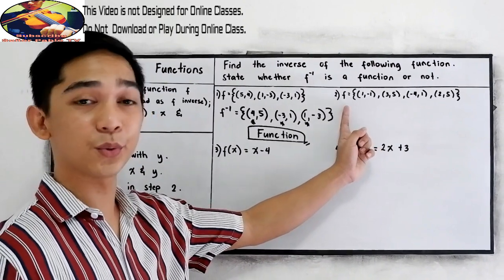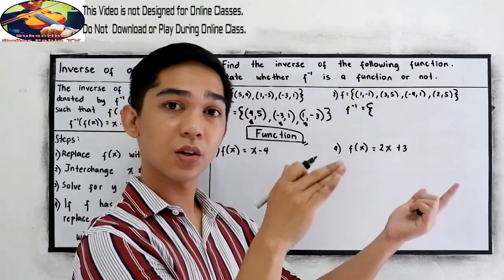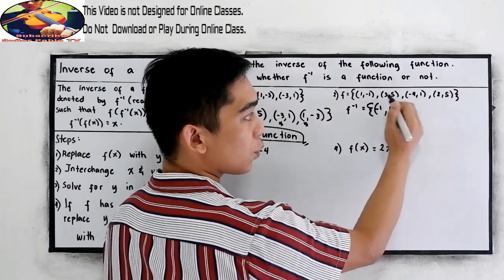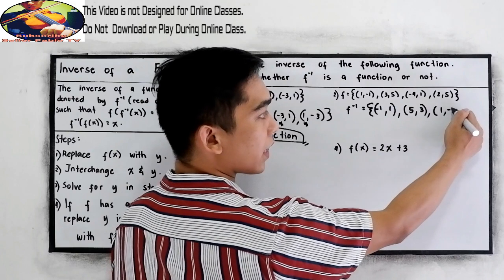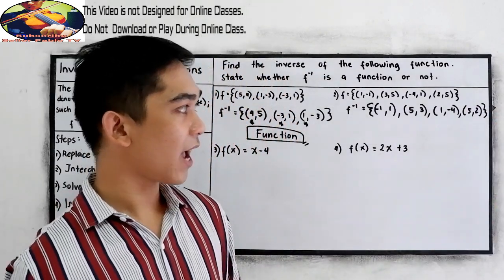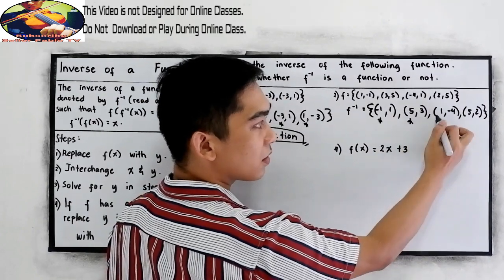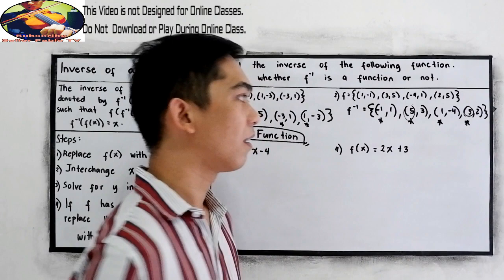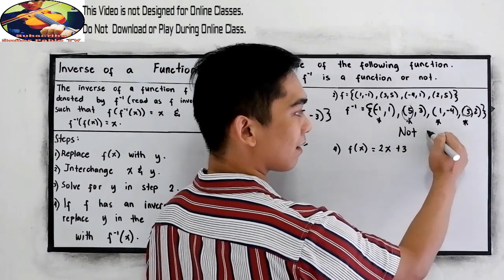Next, number 2. Still ordered pairs — just interchange x with y. So we have (negative 1, 1), (5, 3), (1, negative 4), and (5, 2). Now let's check. Our domains are negative 1, positive 5, positive 1, positive 5. Notice that 5 as a domain is repeated twice. Therefore, this is not a function.